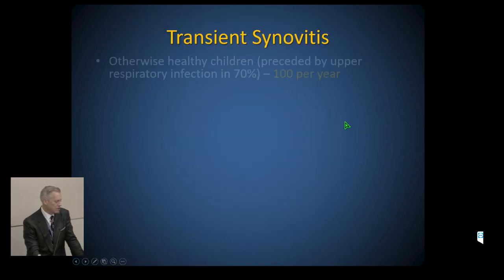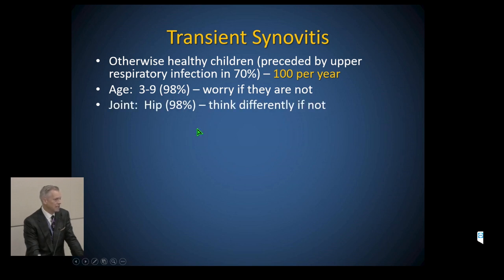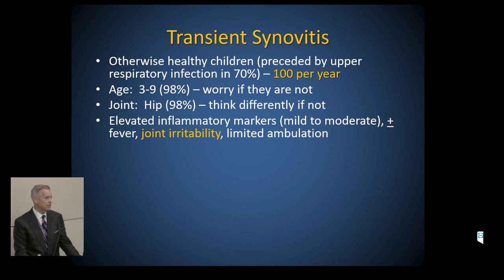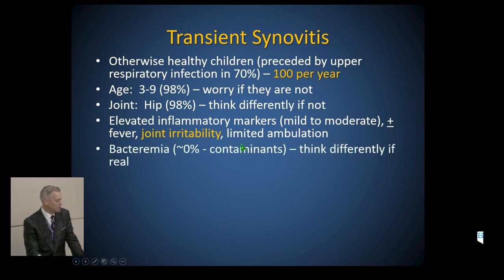With Kingella we see a separation — the sed rate continues to rise and presentation can be indolent, with CRP hovering lower. When I see that kind of mismatch I think about Kingella. Transient synovitis is in otherwise healthy kids, usually associated with an upper respiratory illness, in the three-to-nine age group — and specifically in the hip. I think differently if it's not that age or that joint. It raises my level of worry. The bacteremia rate should be zero for transient synovitis — if something grows, it's septic arthritis in evolution.